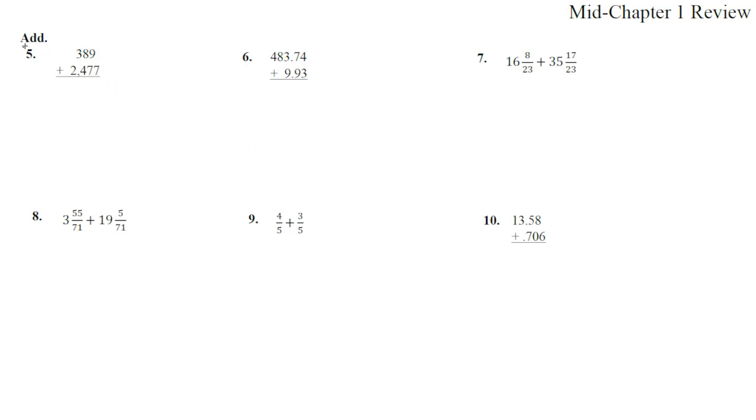So the first one, we are just adding all of these, so that means line up the decimal, get common denominators, and then we will carry by tens in decimals, or carry by 23s in this fraction, 5s in this fraction, 71s in that fraction. So let's write this out with decimals lined up, 389 plus 2477. That's important to note, the 9 and the 7 line up.